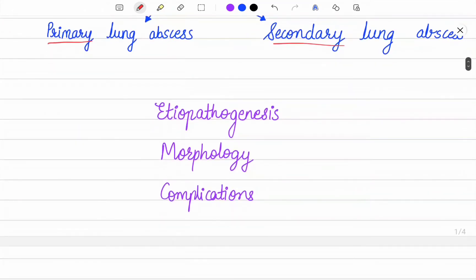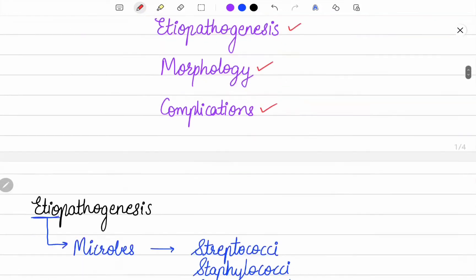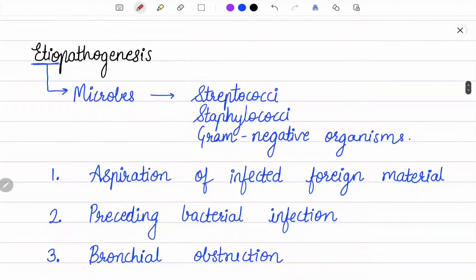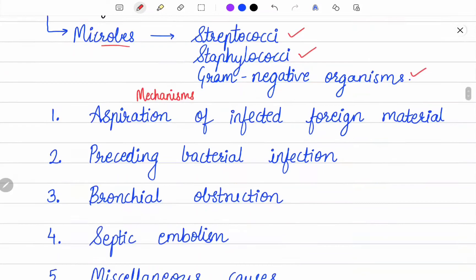According to the competencies, we will be studying etiopathogenesis, morphology, and complications. For etiopathogenesis, the microorganisms commonly isolated in lung abscess are streptococci, staphylococci, and various gram-negative organisms. These are introduced into the lungs by various mechanisms.